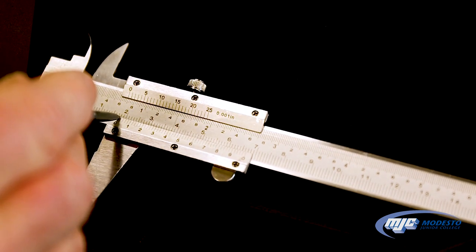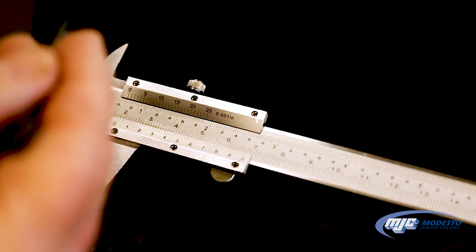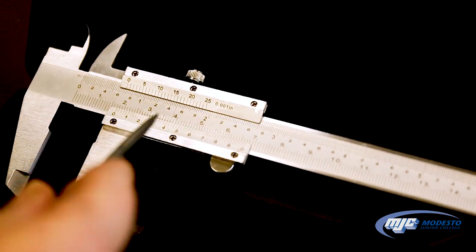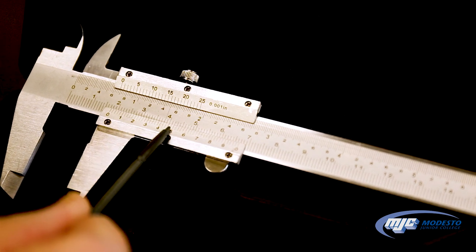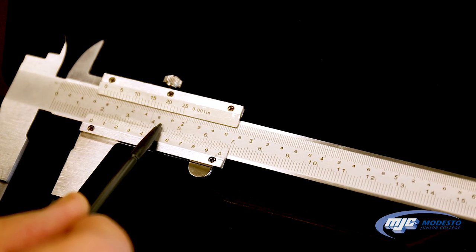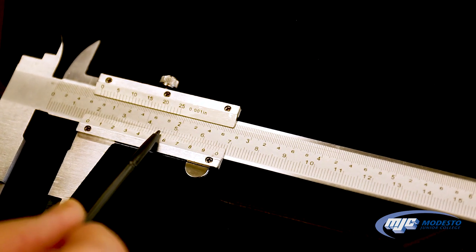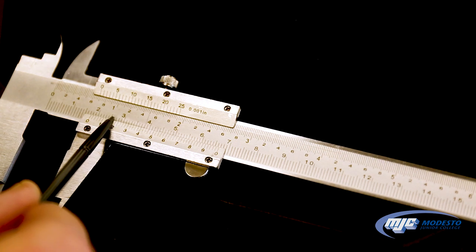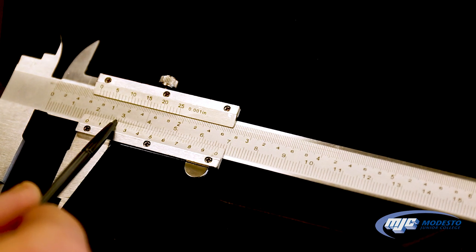The next thing we do is, remember, it's 1.7 something something. To get the last two digits, what we do is we go down to this scale here and all we're looking for is the one line here that best lines up with some line right above it. So for instance, if we see the two here, it doesn't really line up very well with any of these lines above it.